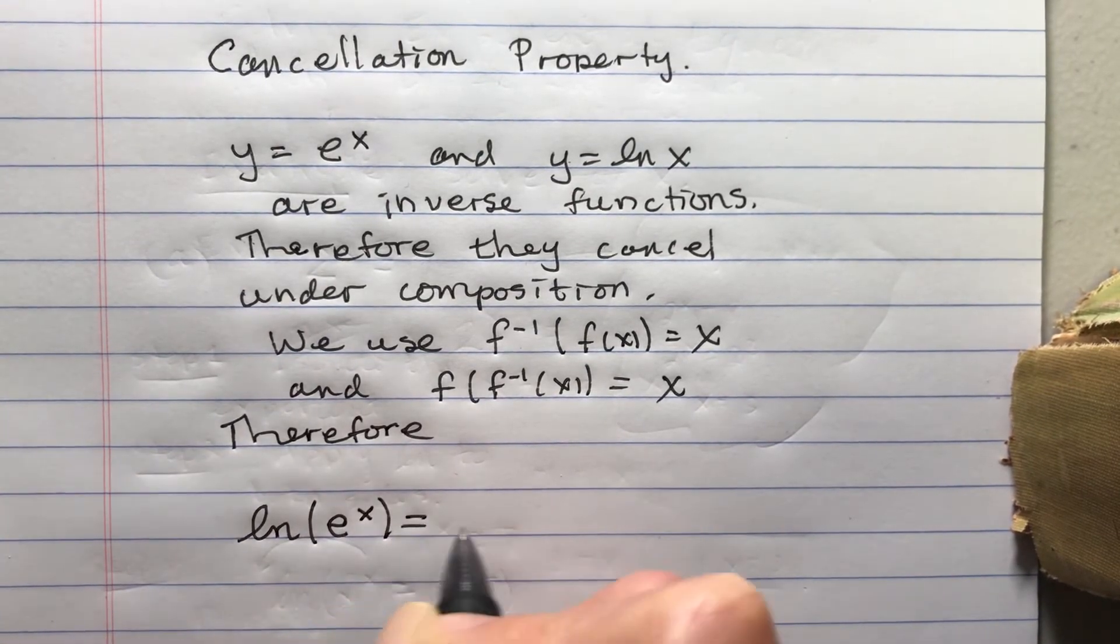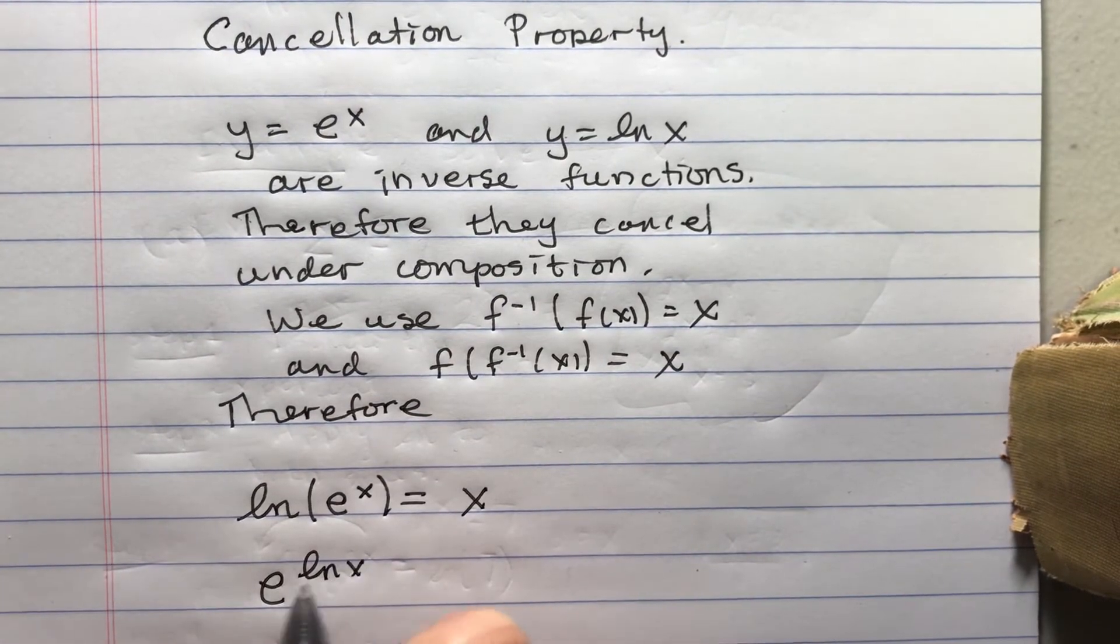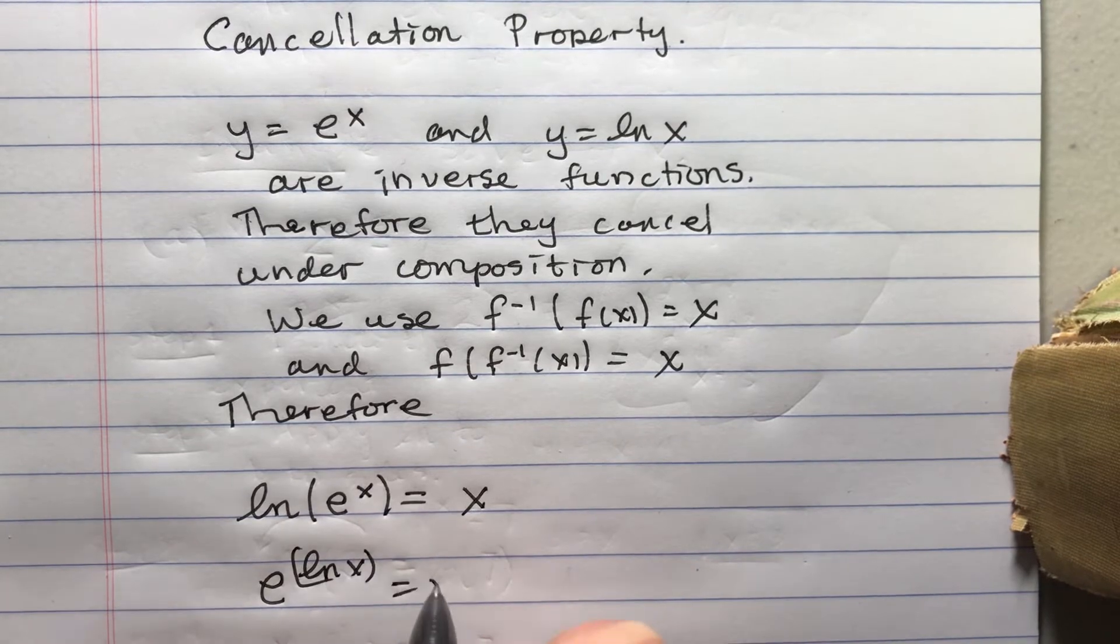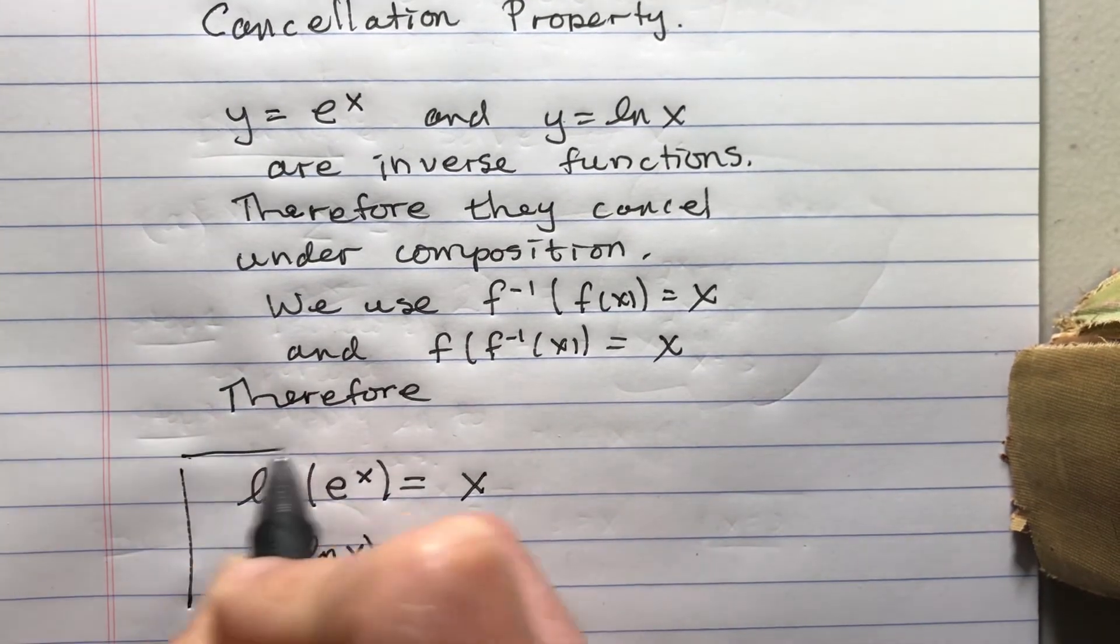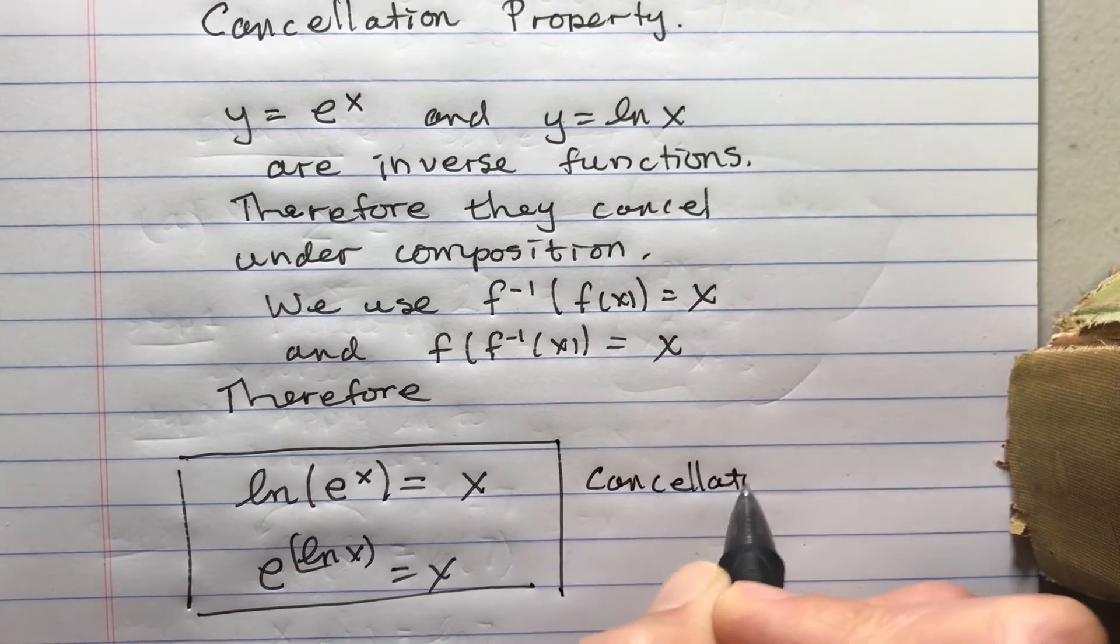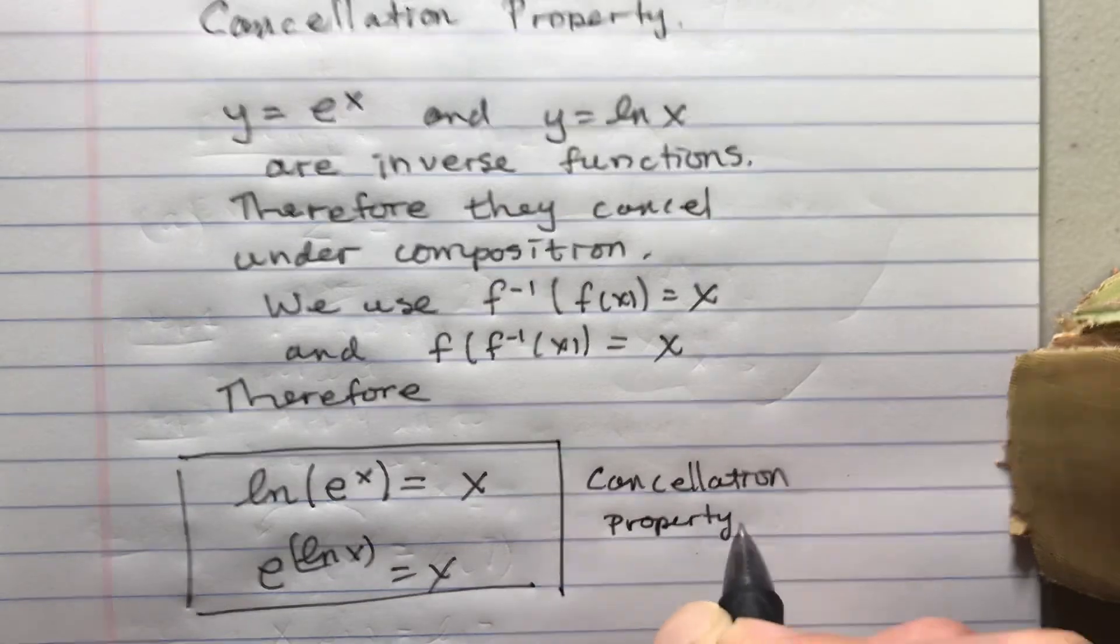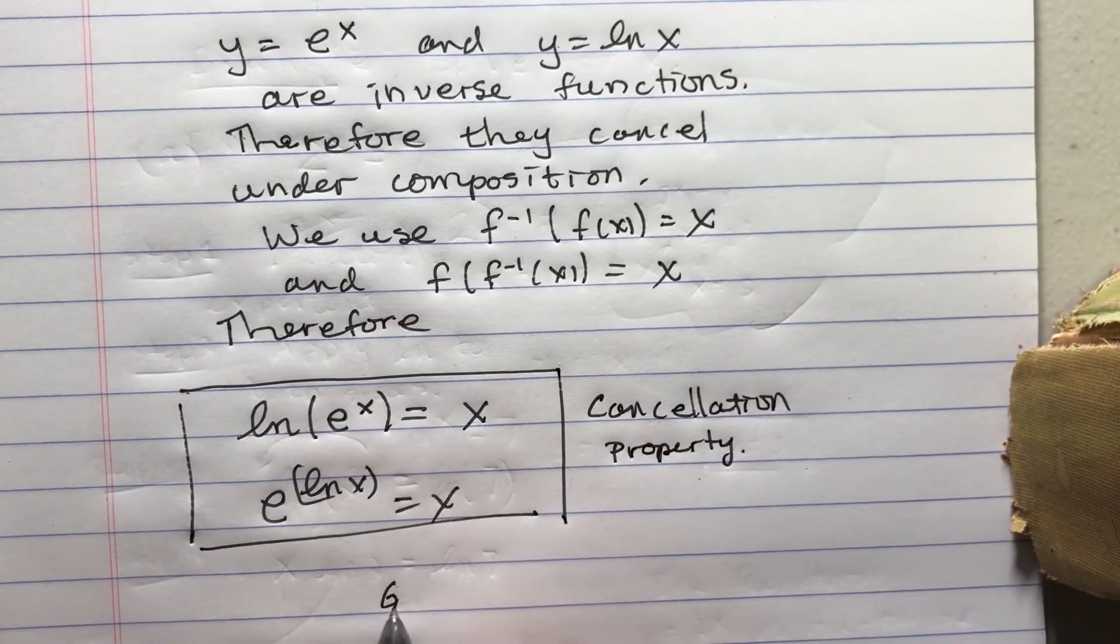This is the cancellation property. I sort of feel like stopping there, but I should use the general case. You know, I like using natural log all the time, but I could have log base b.